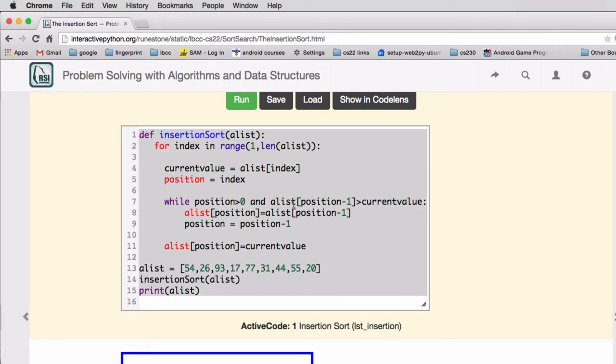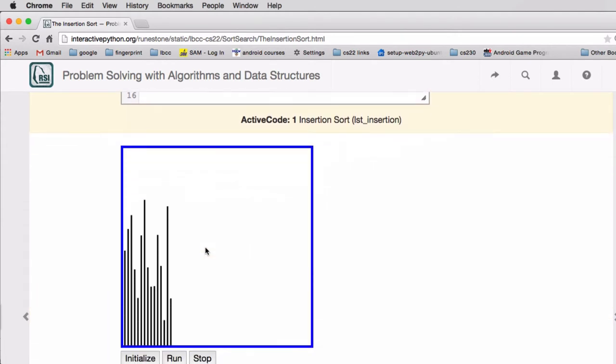So once it's failed this condition or reached zero, it's going to finally move the current value into the slot it found. And so there's how it works.